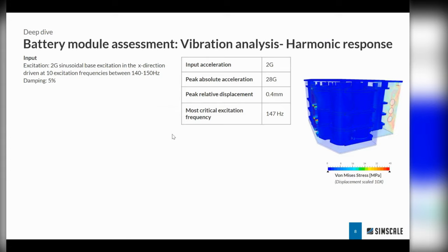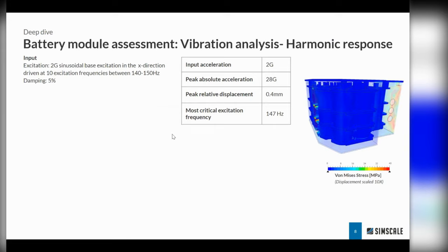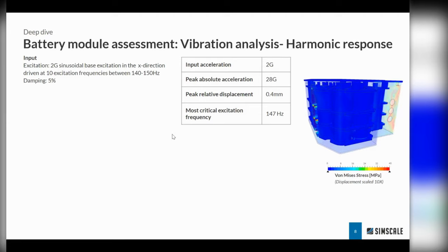Looking at the results: our input acceleration was at 2g and our peak acceleration output was actually at 28g — a large dynamic amplification factor. We see a peak displacement of 0.4 millimeters. When we look at the relative displacements between the parts, that's really what can be critical to understand if we have clearance issues within our battery module. For example, if you've got a plate next to a casing with only 0.1 millimeters spacing, a peak displacement of 0.4 millimeters will have effects on noise and structural integrity, maybe bolt unfastening due to knocking between the parts.